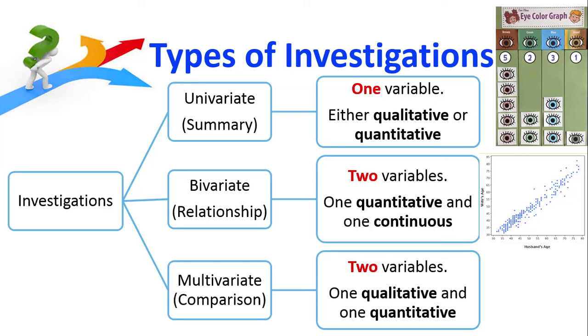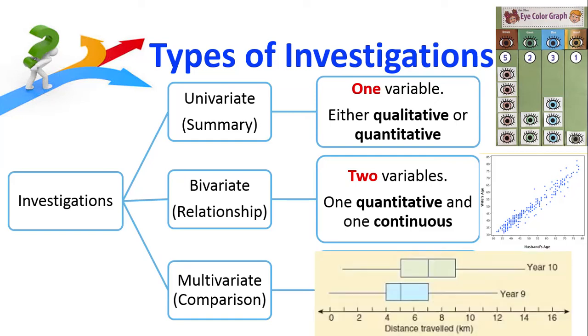You might be comparing whether you're a smoker or a non-smoker. It's any kind of variable that is a group. The other variable must be quantitative, so it must be number. And so that's going to lead to this kind of thing here. And there's an example there: we're comparing our year nines and our year tens and looking at what distance they travel to get to school. So that's a multivariate which we're going to go into in more detail.